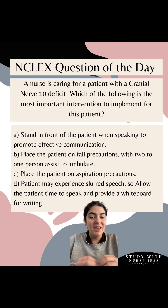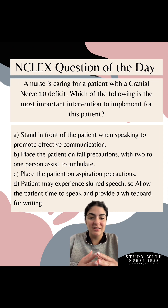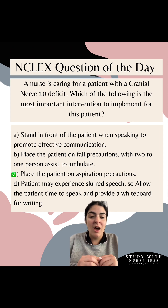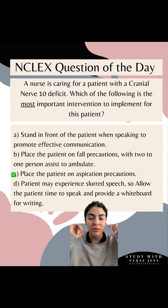If you're doing practice questions, take the time to do content review and refresh your memory on cranial nerves. Cranial nerve 10 is the vagus nerve, and the vagus nerve is in control of swallowing — so option C, aspiration precautions, is your answer. Option B would be a defect in cranial nerve 8, the vestibulocochlear nerve — the nerve of your ears, which helps control balance.